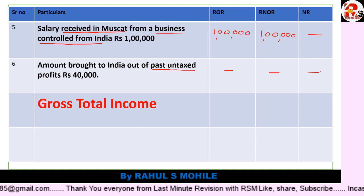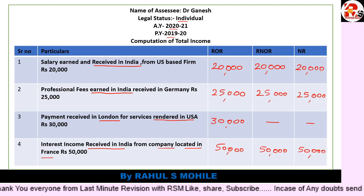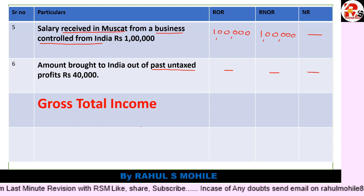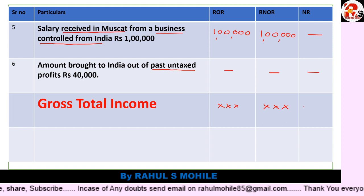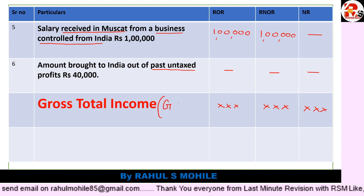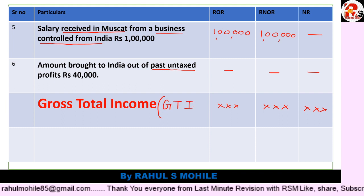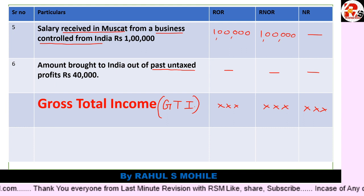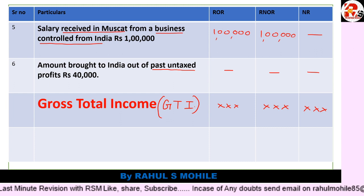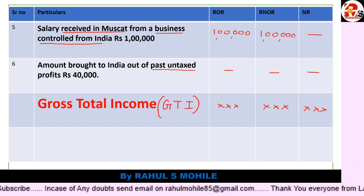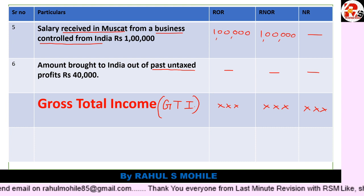Now add up all three columns. Whatever total you get, that is the Gross Total Income — GTI. GTI is the short form for Gross Total Income. This was the first practical question. You can check the assignment questions I have forwarded — the PDF is on Google Classroom and also uploaded on Edfly Learn. Download it from there and solve as many questions as you can.